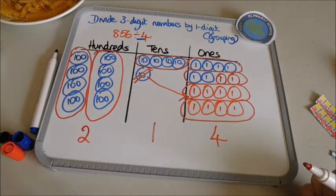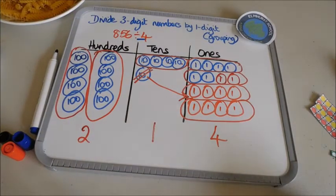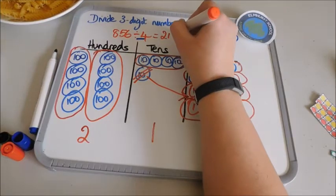So 856 divided by four, split into four groups, gives me the answer 214.